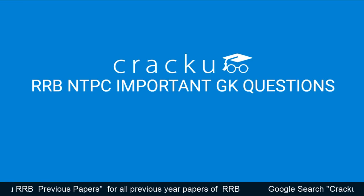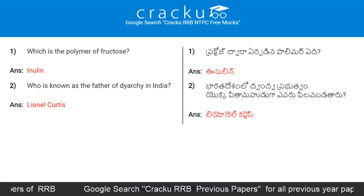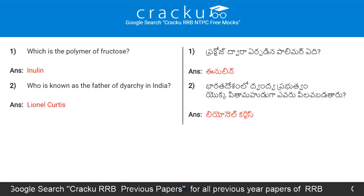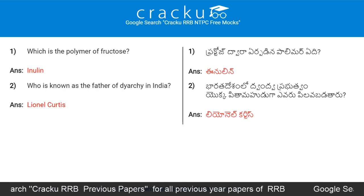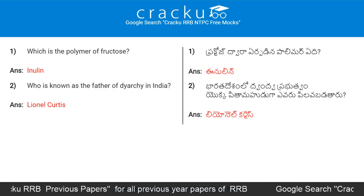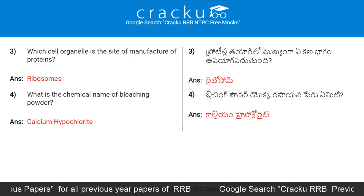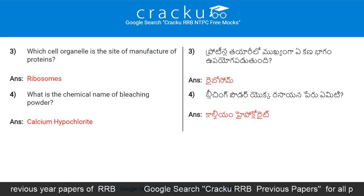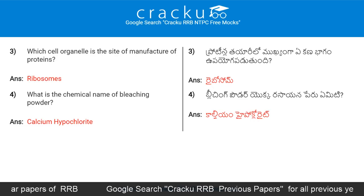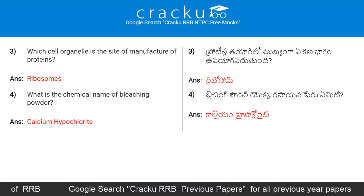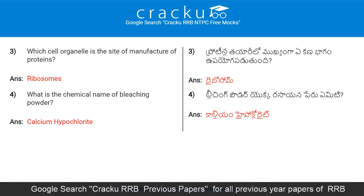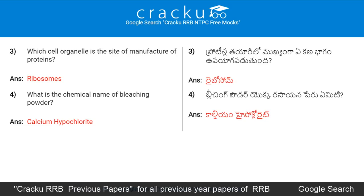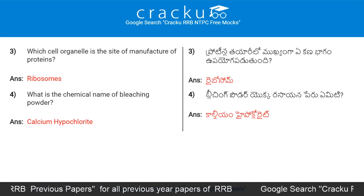Today's first question: which is the polymer of fructose? Inulin. Who is known as the father of diarchy in India? Lionel Curtis. Which cell organelle is the site of manufacture of proteins? Ribosome. What is the chemical name of bleaching powder? Calcium hypochlorite.